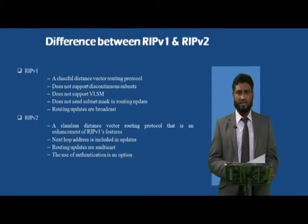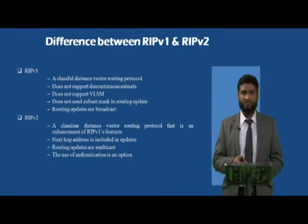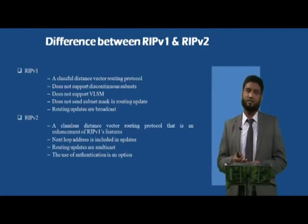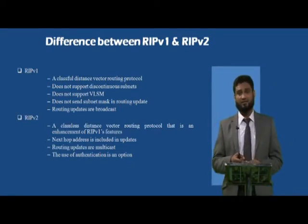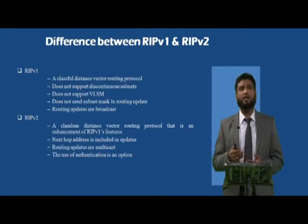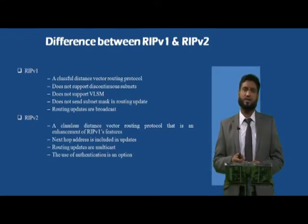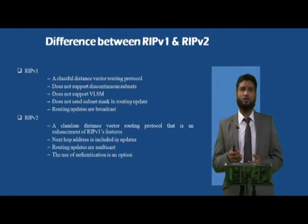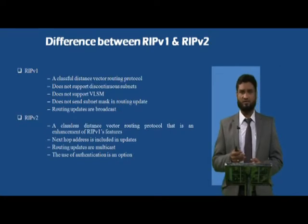Comparing the two versions: RIP version 1 supports only classful addresses, whereas RIP version 2 supports both classless and classful addresses. That means RIP version 2 supports CIDR — Classless Inter-Domain Routing — notation for IP addressing and subnetting. Also, VLSM — Variable Length Subnet Masking — is supported by RIP version 2 but not by RIP version 1.